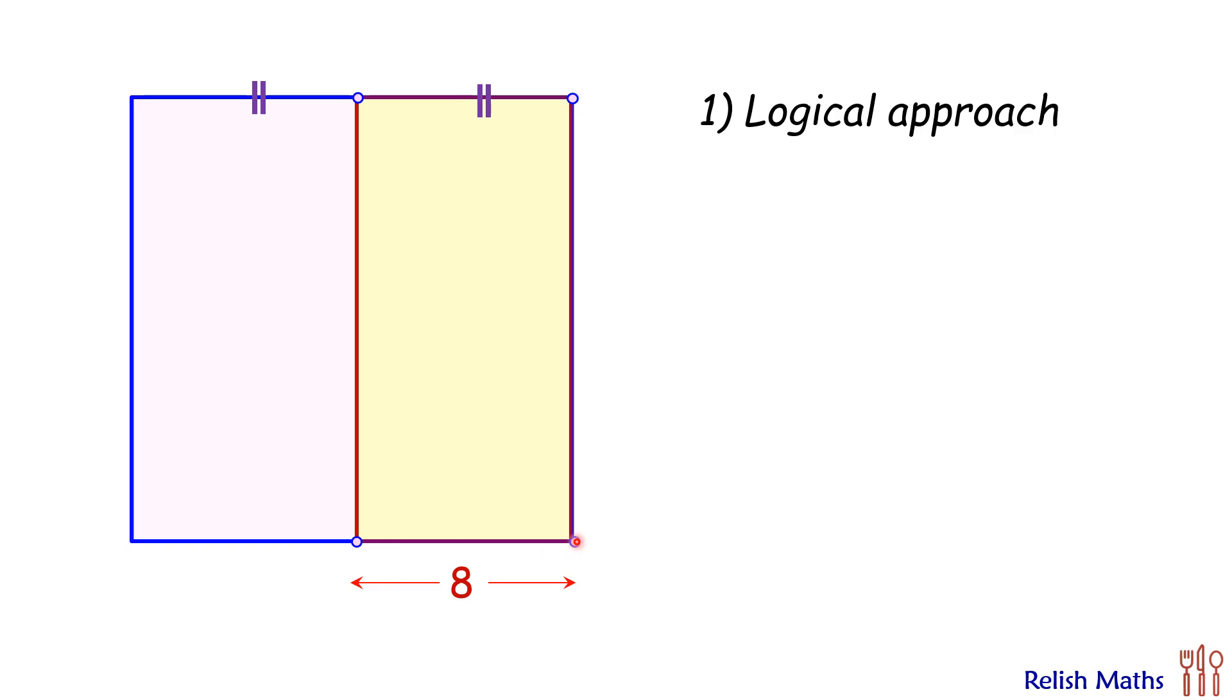So this breadth is 8 centimeters, so this will also be 8 centimeters, and the remaining will also be 8 centimeters. So we can say that the side length of the square is 16 centimeters, and the area of this rectangle will be length times breadth, or 8 times 16, which is 128 centimeters squared. And that's our answer. Let's see the second approach, which will be the theoretical approach.